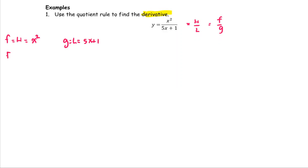The f prime or d-high is the derivative of x squared, which is 2x. The g prime or d-low is the derivative of 5x plus 1, which is 5. The prep work is done.